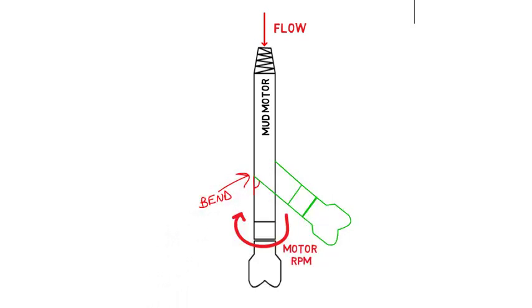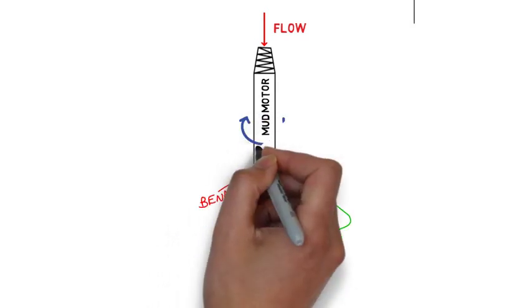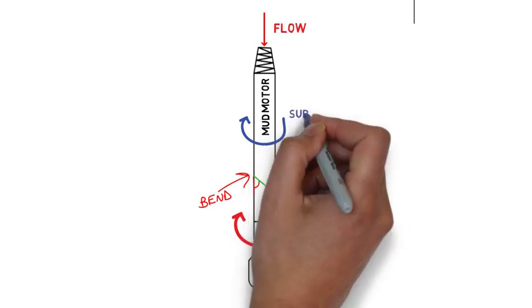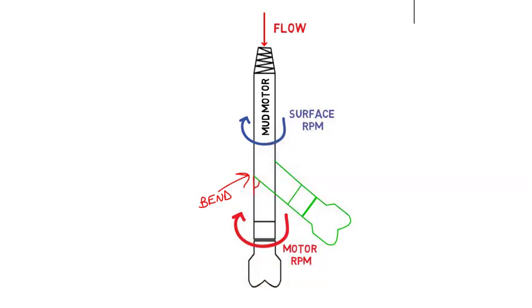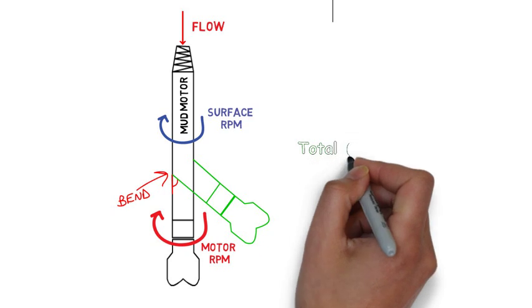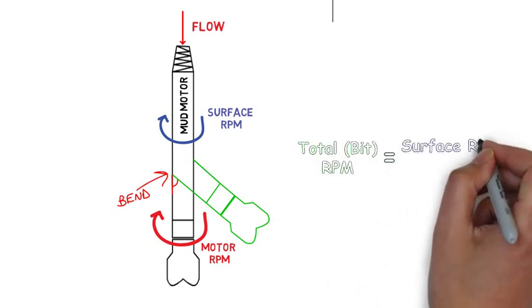During normal drilling, the rig rotates the entire drill string from surface. This mode of drilling is called rotating. While rotating, the bit is turned at the surface RPM plus the motor RPM. This is known as the total or bit RPM.